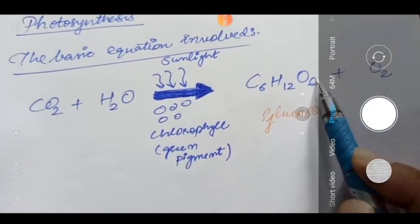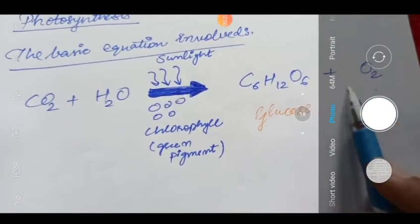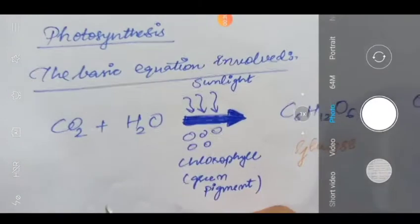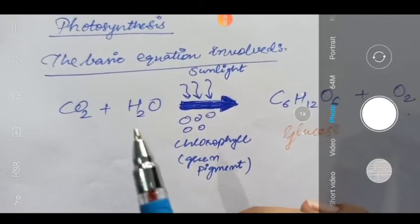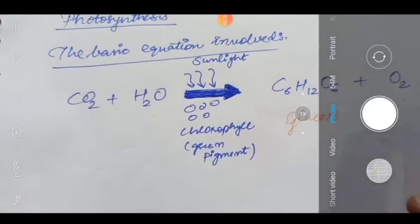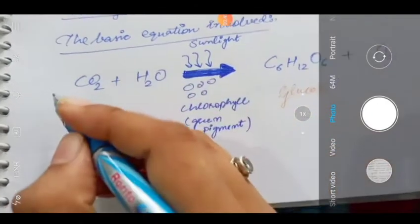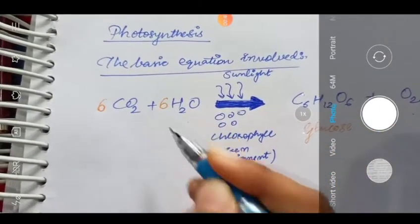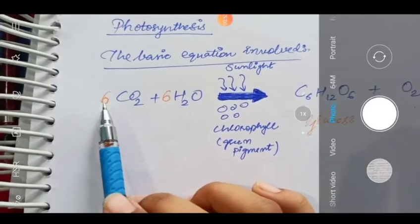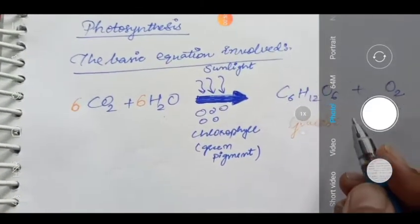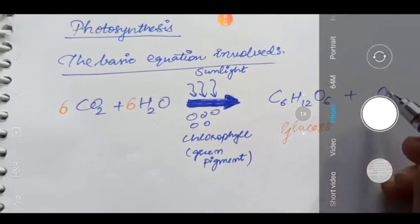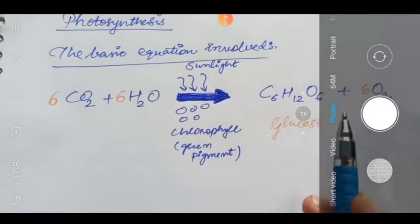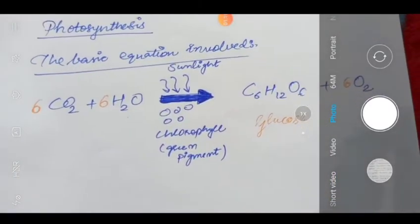To balance the photosynthesis equation, we need equal amounts of each element on both sides. We have 6 carbons in the product (glucose), so we need 6 CO₂ on the reactant side. We have 12 hydrogens, so we need 6 H₂O. On the reactant side we have 12 + 6 = 18 oxygens, and on the product side we get 6 (in glucose) + 12 (in 6O₂) = 18. So the balanced equation is: 6CO₂ + 6H₂O → C₆H₁₂O₆ + 6O₂.